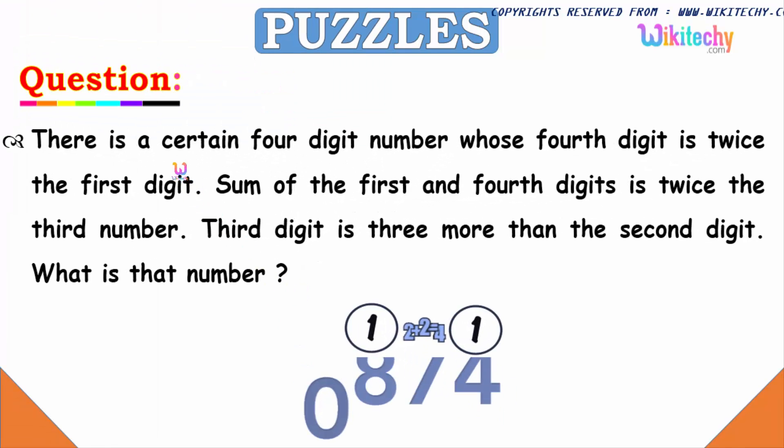Welcome to wikitechy.com. Here is a question. There is a certain four-digit number whose fourth digit is twice the first digit, and the sum of the first and fourth digits is twice the third number, and the third digit is three more than the second digit. What is that number?